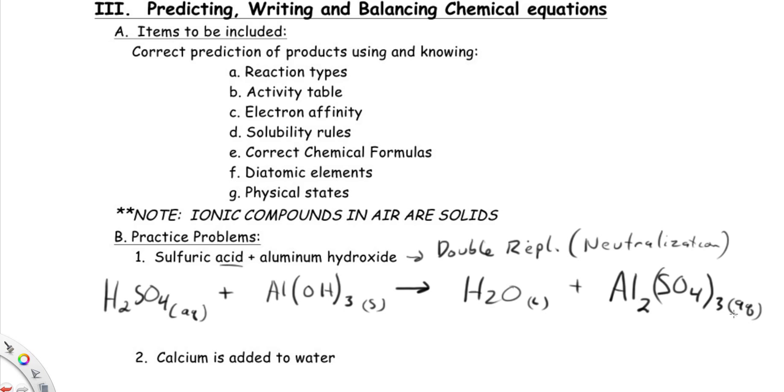And now we need to balance it. But you can see, how did we predict what was going to be formed? We knew this was double replacement. Once we wrote out the formulas of the two compounds, we could see they're going to switch partners, switch last names here as they did and form those products. And that's double replacement.